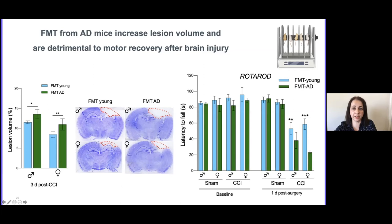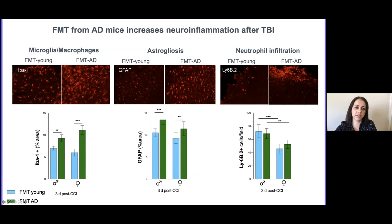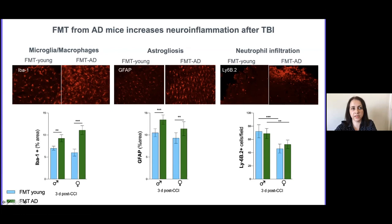We also saw this in the inflammation data — we saw more microglia, macrophages, and more astrogliosis in the animals that received fecal matter transplants from Alzheimer's, compared to animals that received fecal matter transplants from young healthy controls. Nevertheless, we did not see any difference in all markers, such as neutrophil infiltration. The changes were specifically in neuroinflammation and central inflammation.